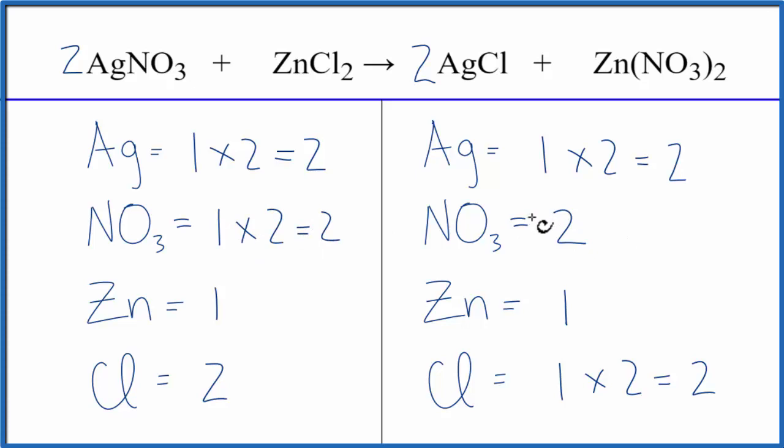And we're done. This equation is balanced. If we look at this NO3, because it stays together in the chemical reaction as one item, it makes the balancing a lot easier. This is Dr. B with the balanced equation for AgNO3 plus ZnCl2. Thanks for watchin'.